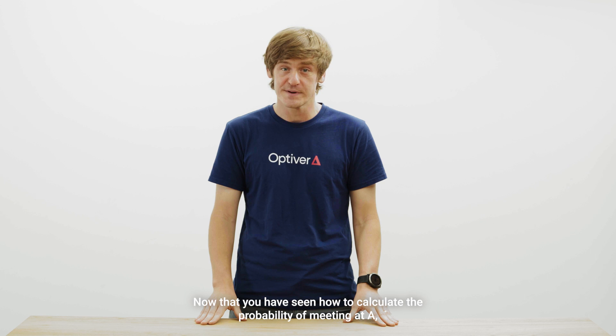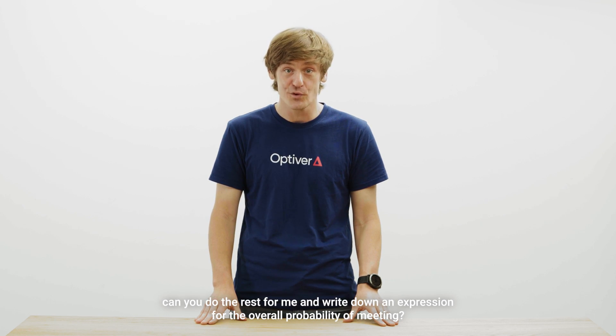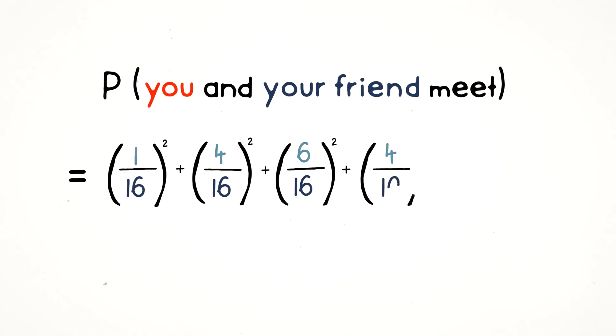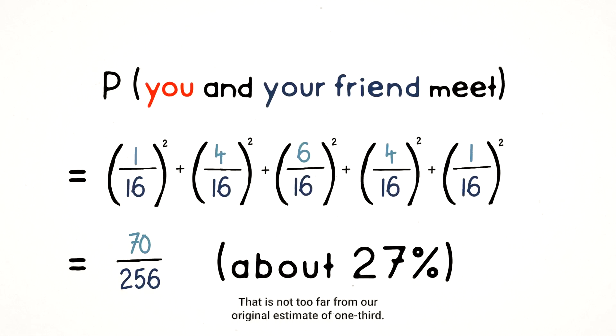Now that you've seen how to calculate the probability of meeting at A, can you do the rest for me and write down an expression for the overall probability of meeting? We have to repeat what we've just done for A for each possible meeting point and then add them all together. So all we really have to do is square each probability and then sum. I'll save you the busy work. This is equal to 70 over 256, which is a probability of about 27%. That is not too far from our original estimate of 1 third. So, indeed, it is quite unlikely that you will run into your friend in this example.